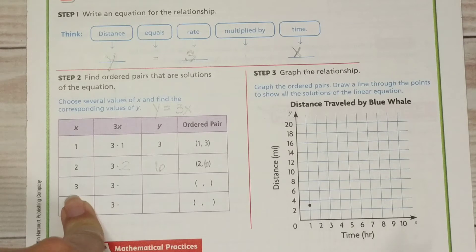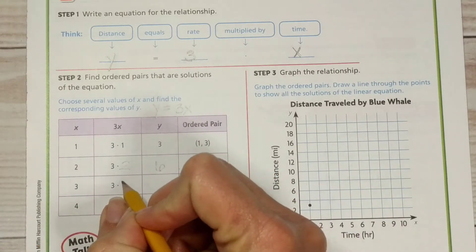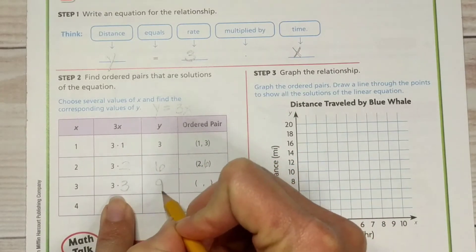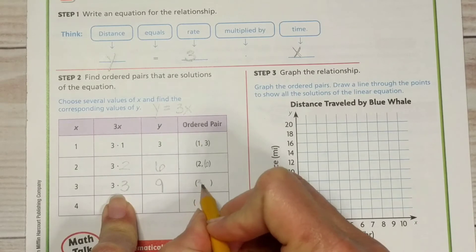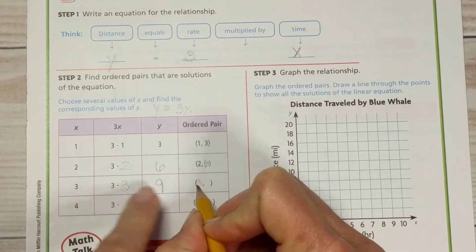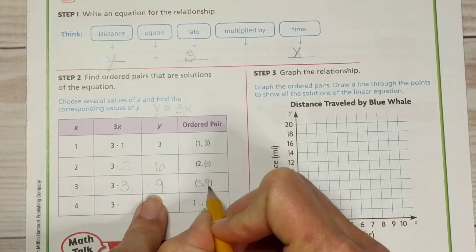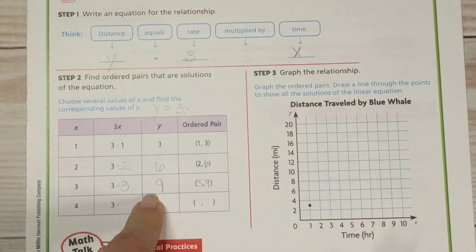All right. If the whale swims for 3 hours at a rate of 3 miles per hour, 3 times 3 gives us 9. So our ordered pair is 3 for the x value, 9 for the y value.